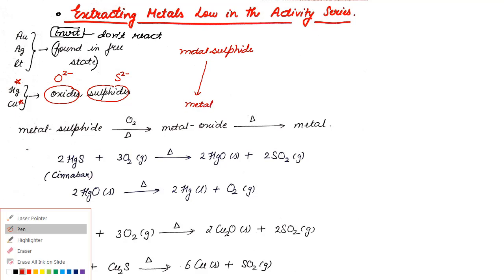But the problem in this case is the conversion of metal sulfide to metals directly is really tough. It requires lots of energy, it requires lots of money. So the conversion of metal sulfide to metal practically is very tough. So what do we do? We first convert the metal sulfide into metal oxide.